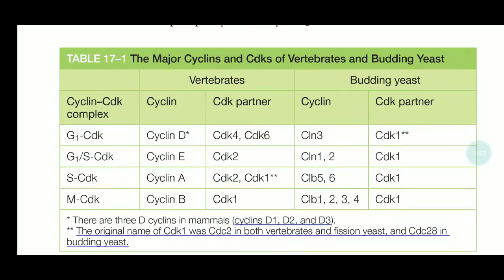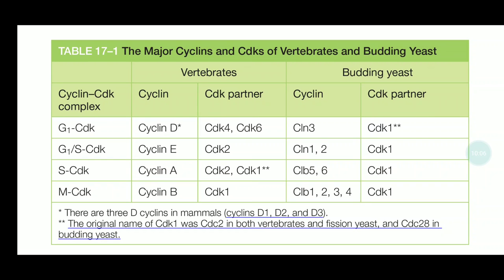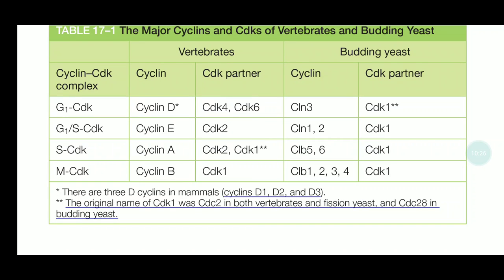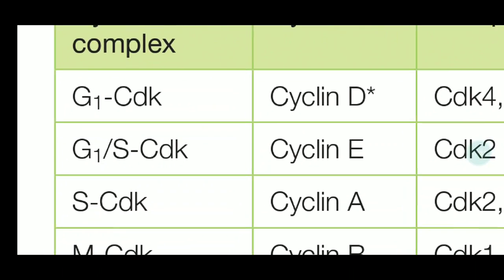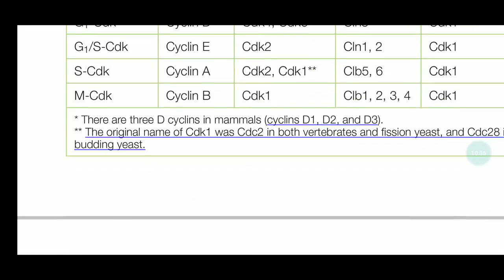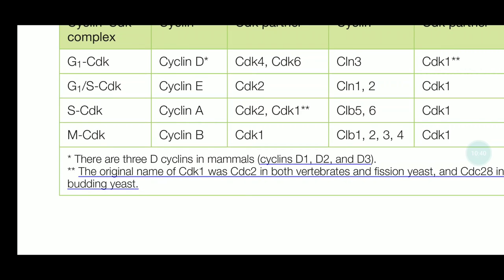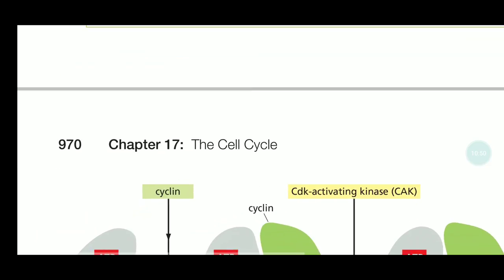This picture shows the major cyclins and CDKs in vertebrates and budding yeast. The cyclin-CDK complexes are as follows: Cyclin D with G1-CDK; Cyclin E with G1/S-CDK; Cyclin A with S-CDK; and Cyclin B with M-CDK. The Cyclin D complex is particularly important.